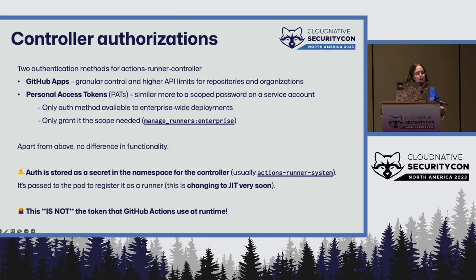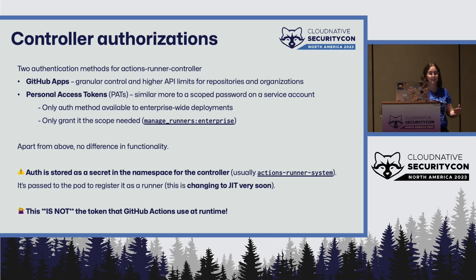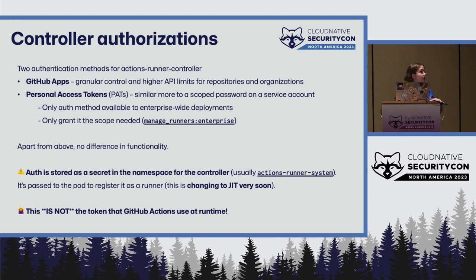Being a community project, ARC did what was reasonably expedient. The authentication is stored as a secret in the namespace in the controller — normally in the 'actions-runner-system' namespace — and is passed to the pod to register it as a runner. Please do not give that token or that GitHub App more than it needs. This is changing to just-in-time authentication very soon. And lastly, this is not the token that GitHub Actions uses at runtime — that is already a just-in-time generated token.